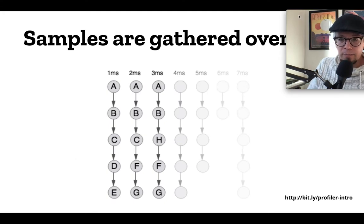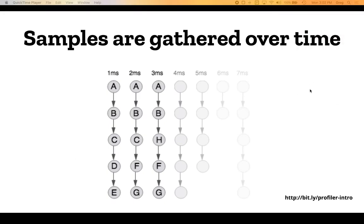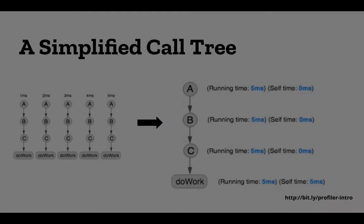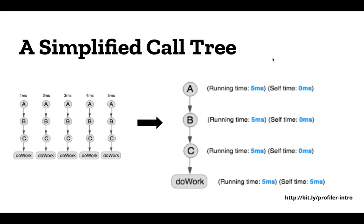Samples are gathered over time. For example, at one millisecond there is a sample taken of a stack — function A calls function B, calls C, calls D, calls E, where E is the actual function that's running. Then G runs when the next sample is taken one millisecond later. More and more samples are taken over time. Now if you have 10,000 samples that is not a useful thing to analyze by looking at all of them, so you have to summarize it.